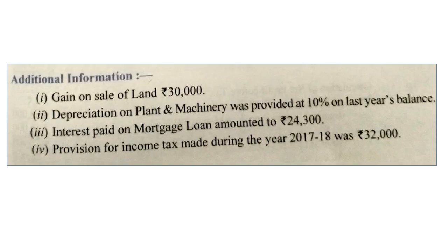Additional information: point one — gain on sale of land rupees 30,000. Point two — depreciation on plant and machinery provided at 10% on last year's balance. Point three — interest paid on mortgage loan rupees 24,300. Point four — provision for income tax for 2017-18 is rupees 32,000 (this is the provision made, credited to the provision for taxation account).